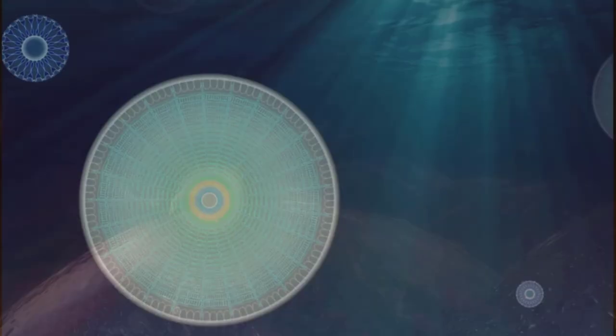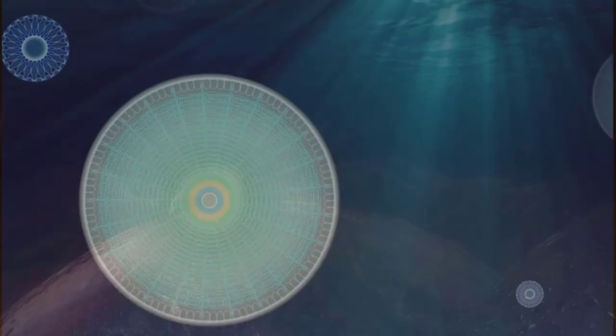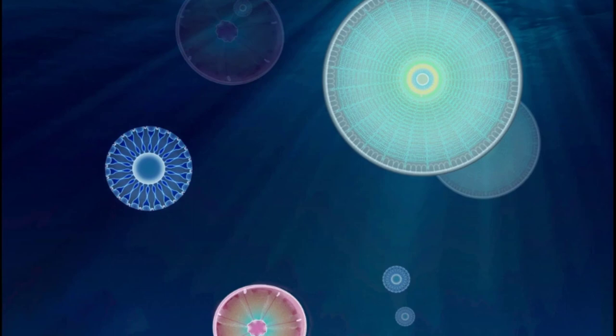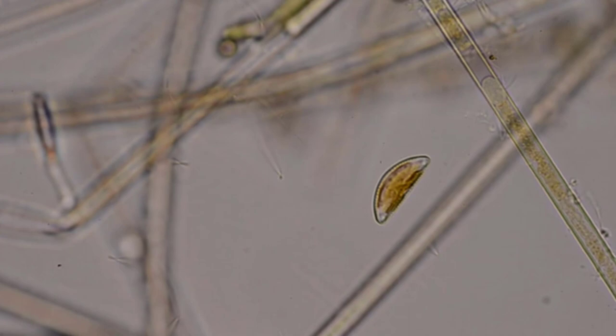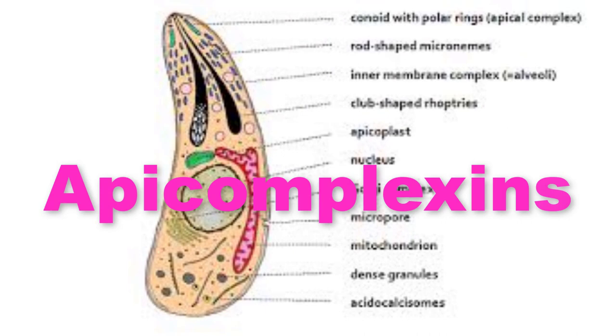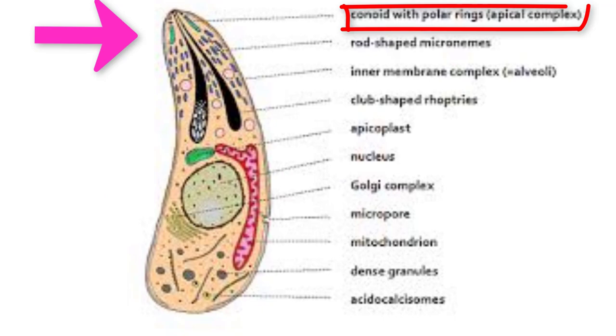Another group is the Chromalviolata, which is very diverse and includes the dinoflagellates and the diatoms. The ciliated protozoans, or ciliates, are among the most complex cells on Earth and have been the subject of biological investigations for decades. The Chromalviolata are found in almost any pond water sample and exhibit elaborate and controlled behavioral patterns. The apicomplexans are so named because the apical tip of the cell contains a complex of organelles used for penetrating host cells. Adult apicomplexans have no cilia or flagella.